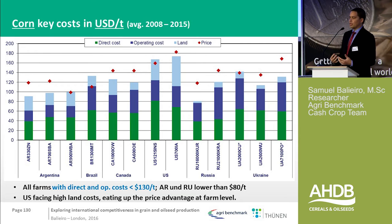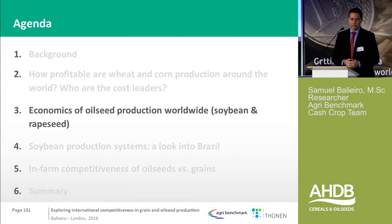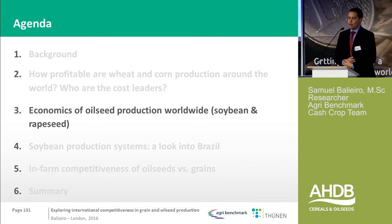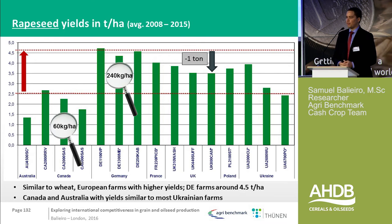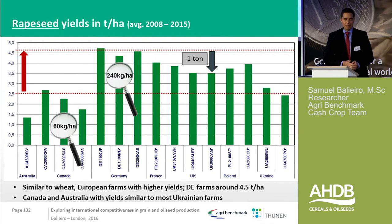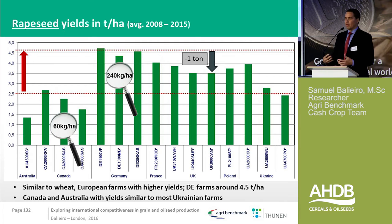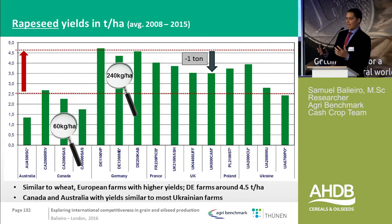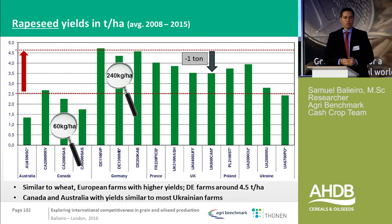Moving to oilseeds — I'll look at soybeans and rapeseed, because I think those are the two major crops besides palm oil. For rapeseed yields, there is also a very big difference in systems. Canada and Australia have much lower intensity and lower yields. Germany, France, and the UK have much higher yields. From our data, UK farms show slightly lower yields than German farms — roughly one ton difference.